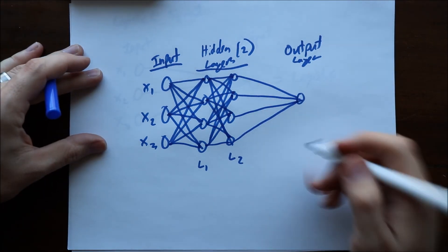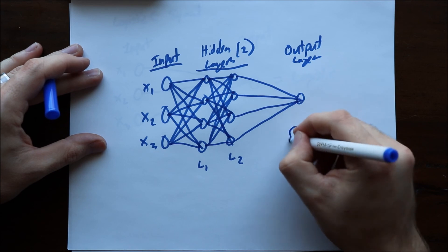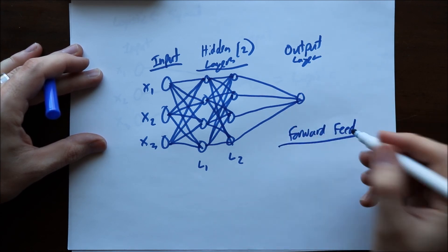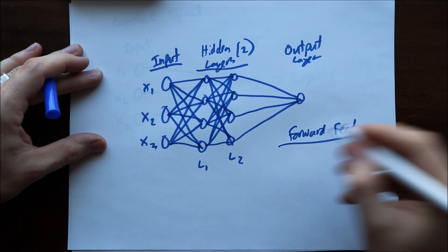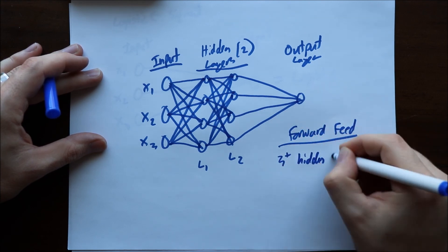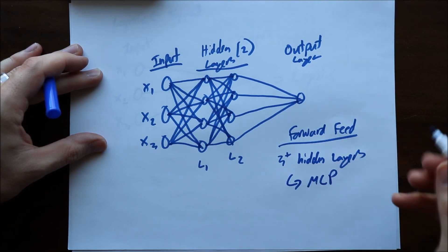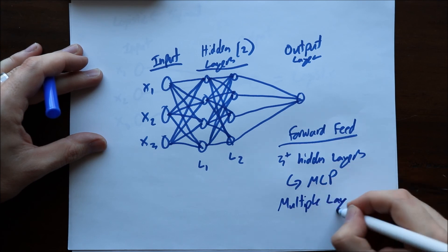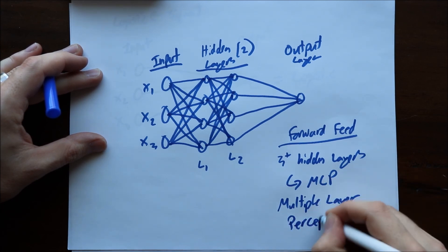This is typically called forward feed neural network. If you have three or more hidden layers, these are also called MLP which is multiple layer perceptron.